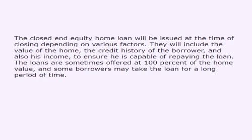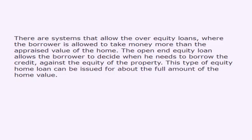The closed-end equity home loan will be issued at the time of closing depending on various factors. These will include the value of the home, the credit history of the borrower, and also his income, to ensure he is capable of repaying the loan. The loans are sometimes offered at 100% of the home value, and some borrowers may take the loan for a long period of time. There are systems that allow over-equity loans, where the borrower is allowed to take money more than the appraised value of the home.